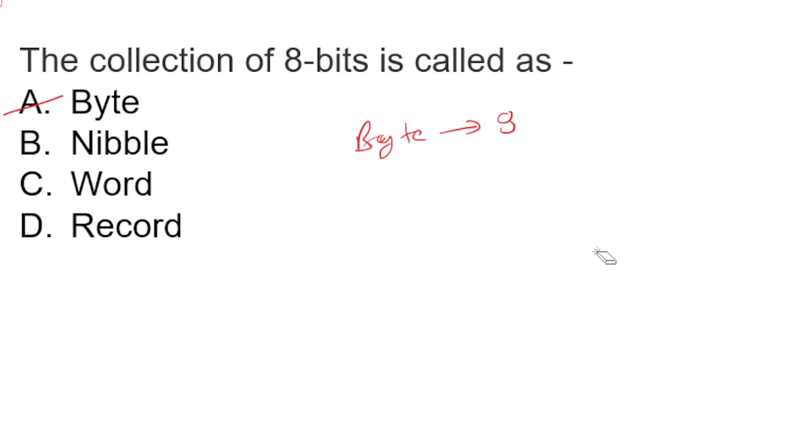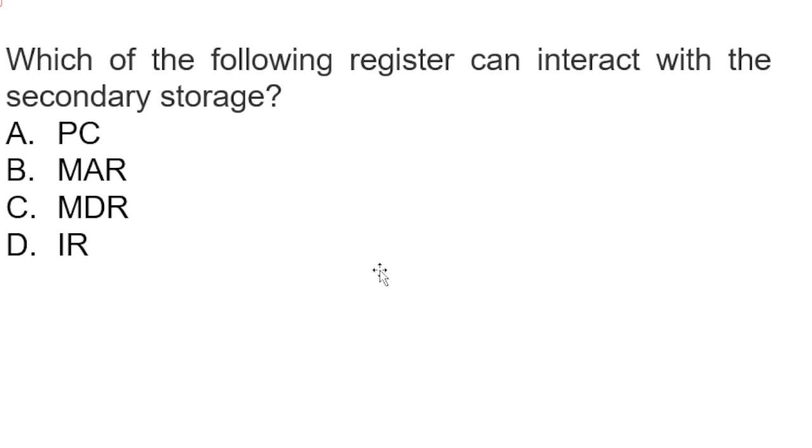Which of the following register can interact with the secondary storage? Correct option is MAR. MAR full form - what is the full form of MAR? MAR is Memory Address Register. It contains 12 bits that hold the address for the memory location. The MAR holds the address of the main memory to which the data is to be transferred.